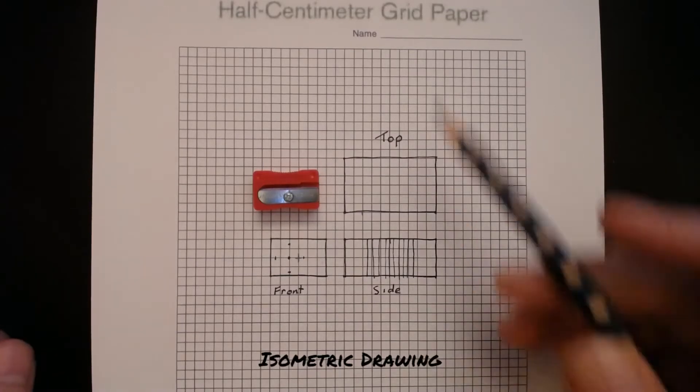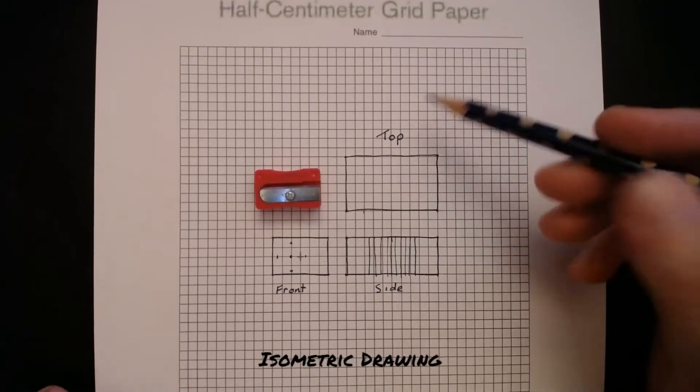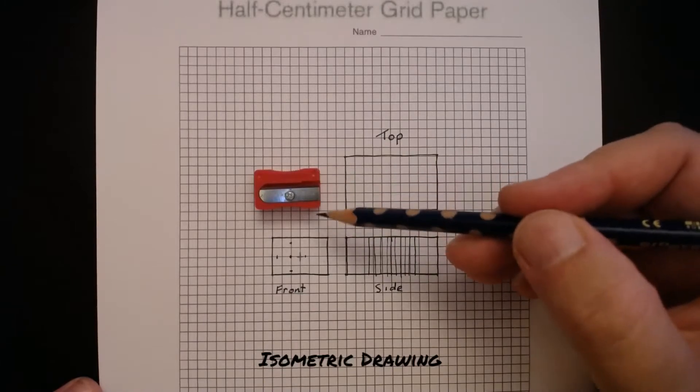Now, in order to transfer the information that we see here onto the top, we need to really think about these boxes and the ratio of how things are laid out.